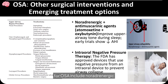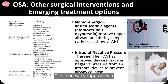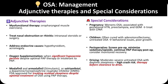Emerging treatment options for OSA include noradrenergic and anti-muscarinic agents, which improve airway tone, and intraoral negative pressure therapy, which uses negative pressure to prevent airway collapse. Adjunctive therapies include myofunctional therapy, which strengthens oropharyngeal muscles, and management of nasal obstruction or rhinitis with intranasal steroids or surgery to improve airflow. Oxygen supplementation may be used when hypoxemia persists despite optimal PAP therapy. For residual daytime sleepiness, stimulants like modafinil, armodafinil, or solriamfetol may be prescribed.